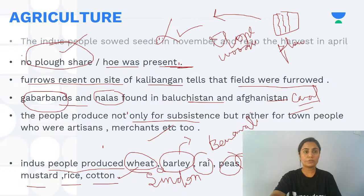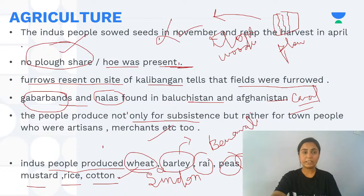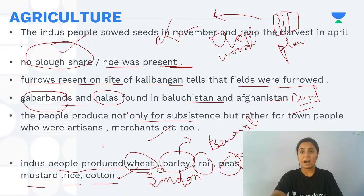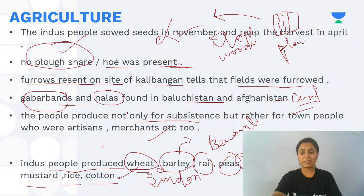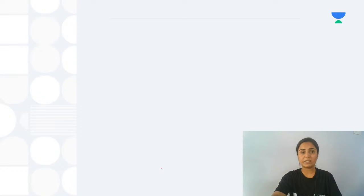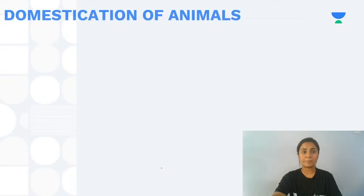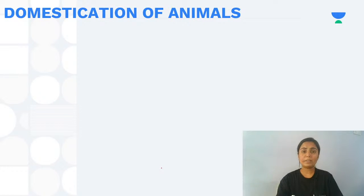Indus people sowed seeds in November and harvested them in April. Wheat, barley, rye, and all such crops were grown and harvested in this seasonal cycle.